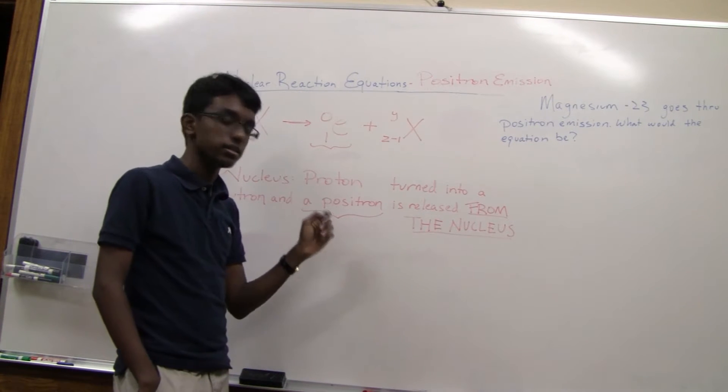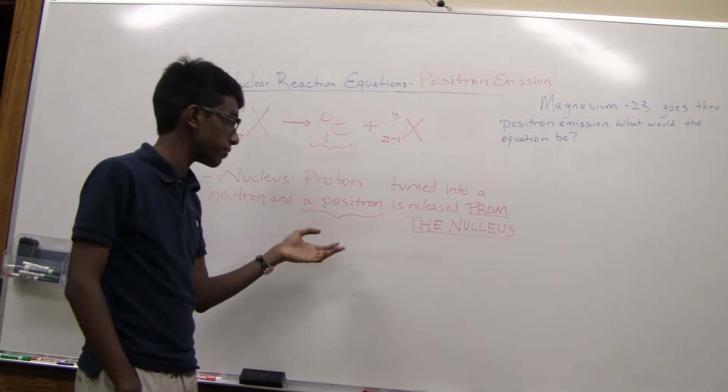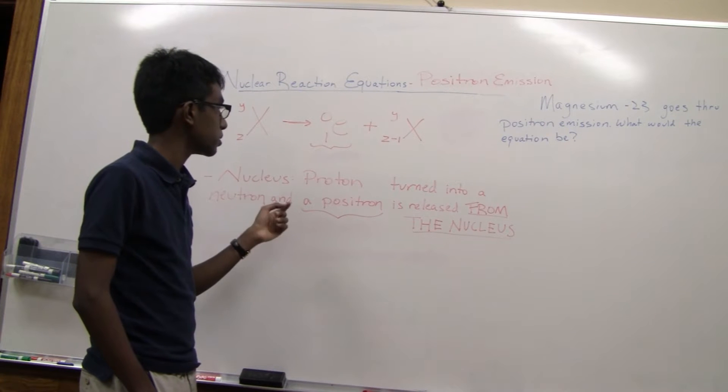And a positron is actually a positively charged electron. I know that sounds weird. It's actually antimatter, which I'm not going to really get into. Just take my word for it. It's a positively charged electron.